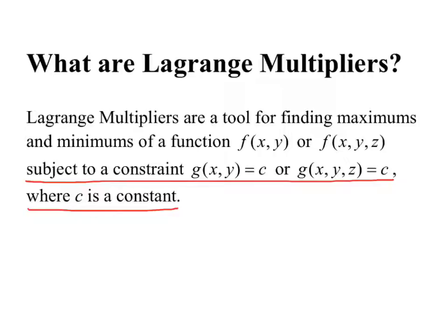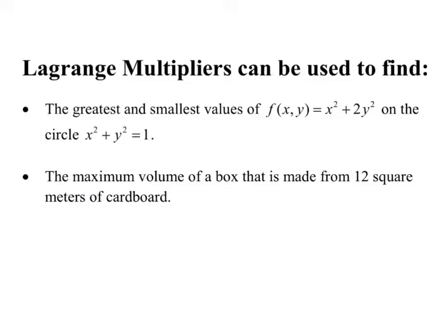So we have a function, and we want the maximums and minimums on a certain constraint. Lagrange multipliers can be used to find the greatest and smallest values of a function z equals x squared plus 2y squared on the circle x squared plus y squared equals 1. Here the circle would be our constraint, and we're trying to maximize and minimize the function on that constraint.